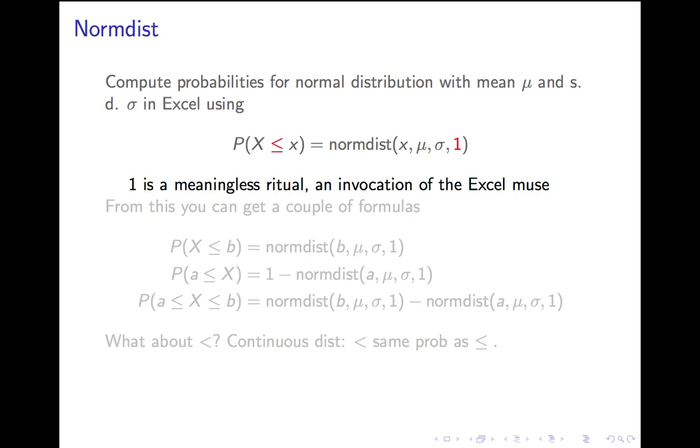And the fourth entry is always 1. Why does Excel make you write 1 every time you do this calculation? There is no reason. It's just silly. We just have to get used to it. And there's a different command that Excel decided to give the same name that you get if you put a 0 in there, which we'll never need to think about. Just think of it as some ritual invocation.